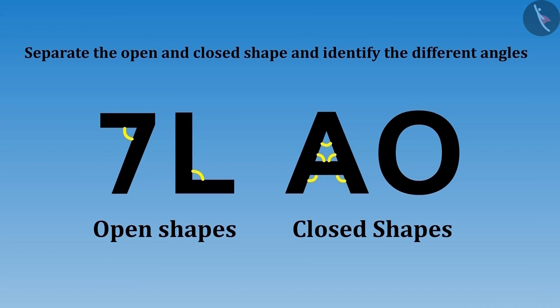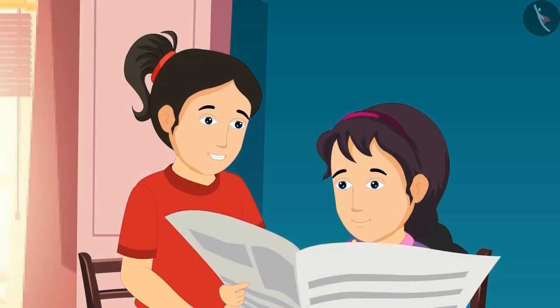Riva, you have identified the angles in A correctly. This is not a closed shape but an open shape. Really? But how is it sister? The shape of A is closed from the top.